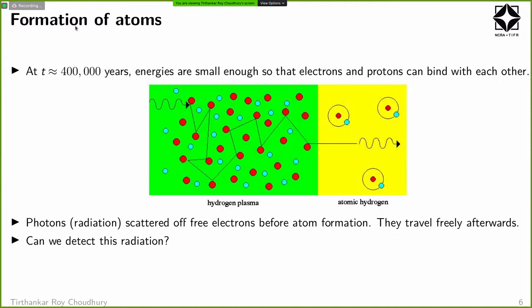At very early times, the universe was so hot that you could not keep electrons and protons together — atoms could not form. If you tried to form them, there was enough kinetic energy to break them apart. The universe needed to be cold enough before atoms could start forming, which happened when the age of the universe was somewhere around 380 to 400,000 years.